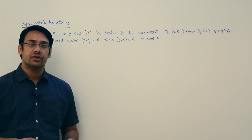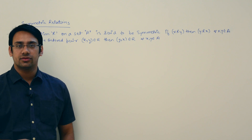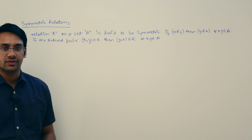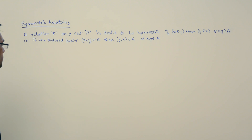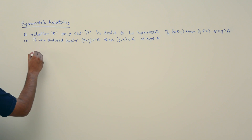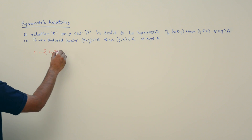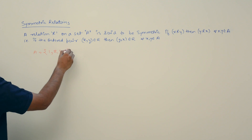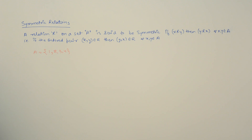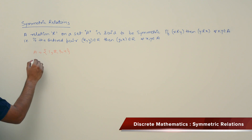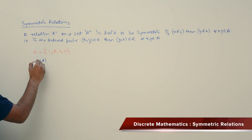Now let us look at the other type of relation called symmetric relation. Assume we have a set A containing {1, 2, 3, 4}. Then you can define a relation over A cross A.